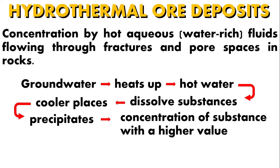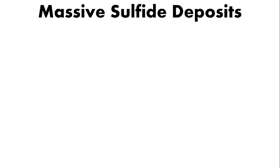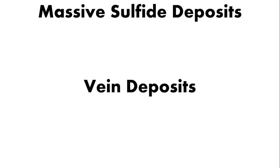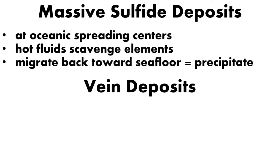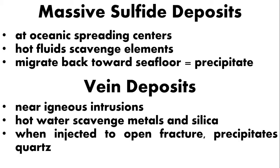There are different types of hydrothermal ore deposits. We have massive sulfide deposits, vein deposits, and strata-bound deposits. A massive sulfide deposit occurs at oceanic spreading centers, where hot fluids scavenge elements like sulfur, copper, and zinc. As these hot fluids migrate back toward the seafloor, they come in contact with cold groundwater and therefore precipitate. Vein deposits, on the other hand, form surrounding igneous intrusions. The hot water scavenges metals and silica from both the intrusions and open fractures. They cool rapidly and precipitate mainly quartz, but also a variety of sulfide minerals, and sometimes gold.